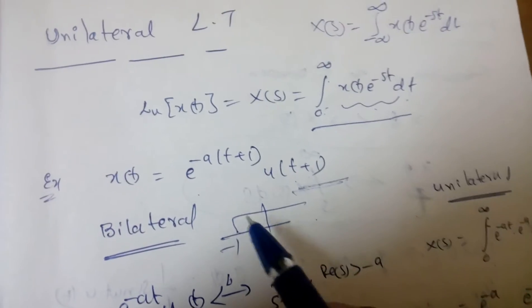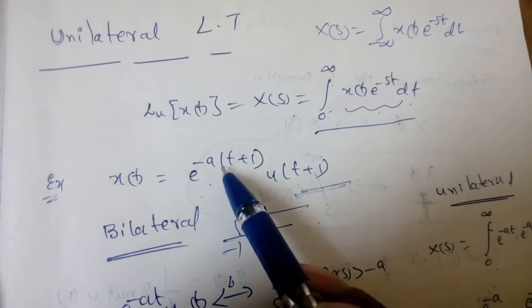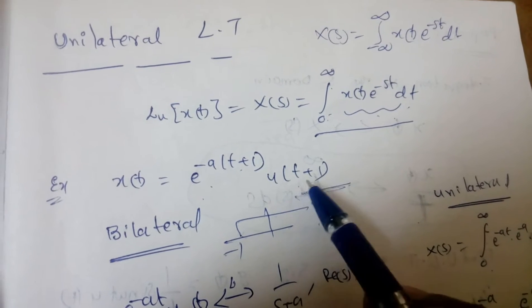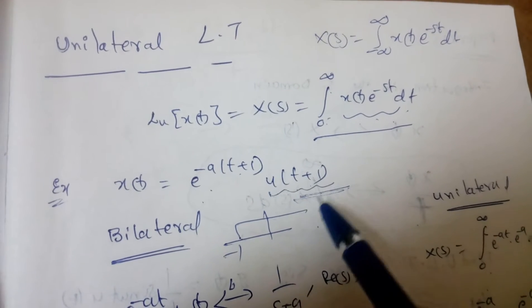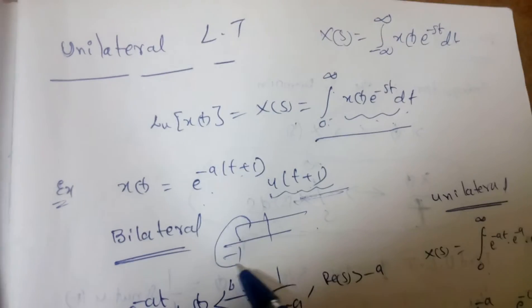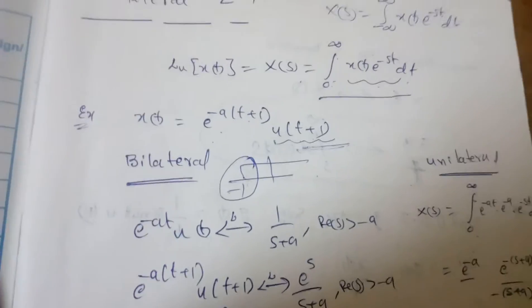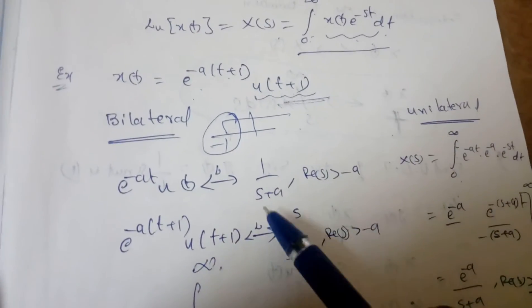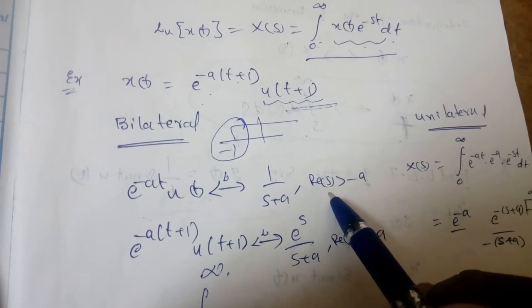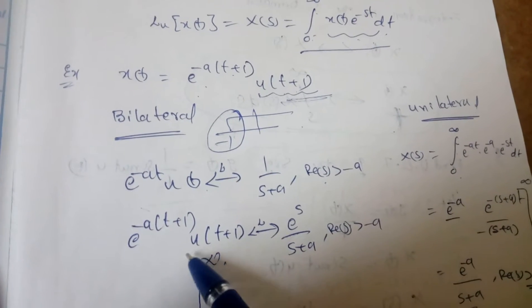For example, if I take x(t) equal to e power minus a(t+1) into u(t+1), we know that t+1 will start from minus 1. If I take the bilateral transform, it should be e power minus a into u(t), giving 1 by s plus a, with the region of convergence: real of s greater than minus a. Then if there is a shifting, I will get e power s.